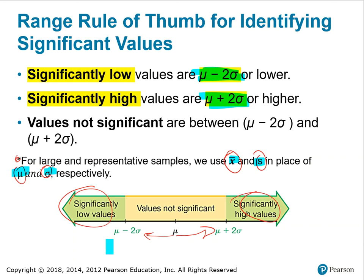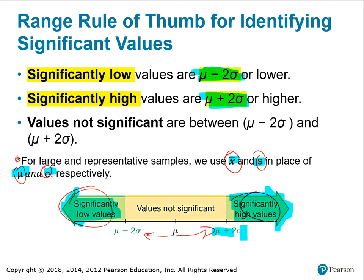Here's a pictorial representation. This is identifying the values that are significantly low. This is significantly high, and this is the relationship between the mean and the standard deviation to identify those numbers that are significant from those that are not.